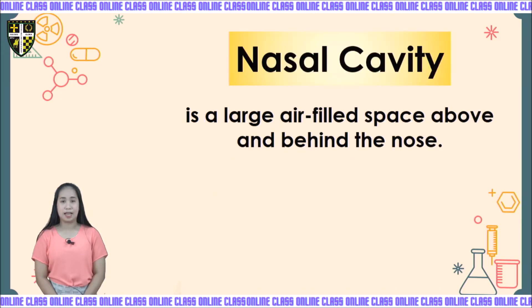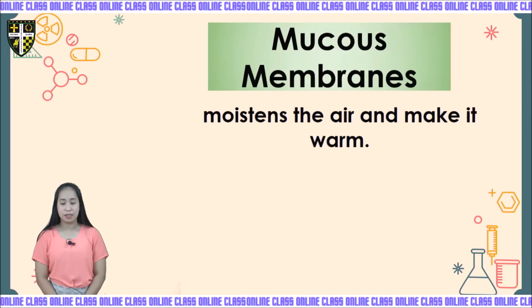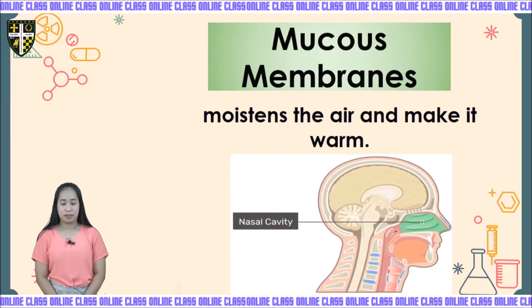The next part is the nasal cavity. The nasal cavity is a large, air-filled space above and behind the nose. In the nasal cavity, we have mucous membranes. The mucous membranes moisten the air and make it warm, so you won't get nosebleeds from a dry nose. The green one shown here is our mucous membrane.